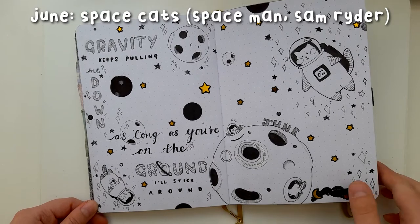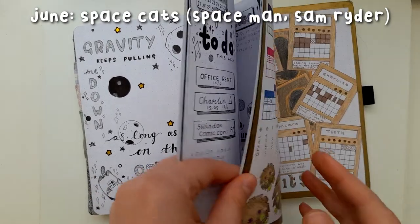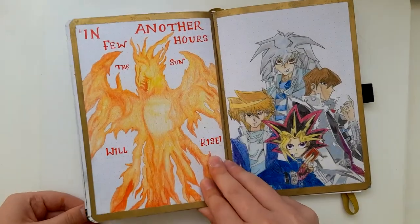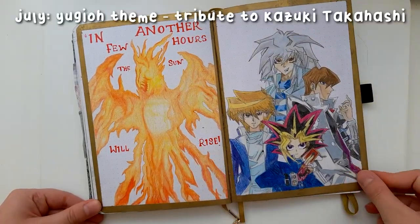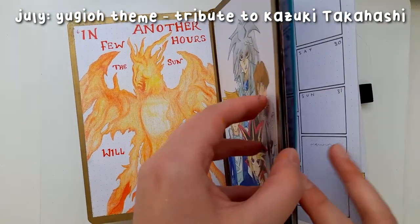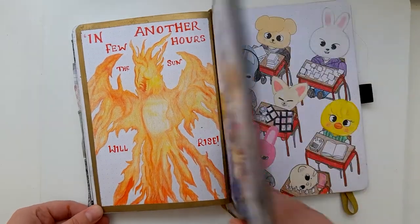In June I did a Space Cat theme, this one is so much fun. I really love this theme. It was inspired by Samrider's Eurovision performance, which I also absolutely love. July was a special one for me. This was the month I did my tribute to Kazuki Takahashi, who is the creator of Yu-Gi-Oh! He passed away on the 4th of July this year, so this one was really special.